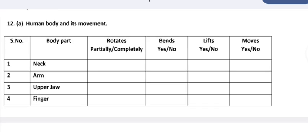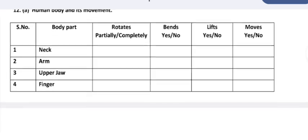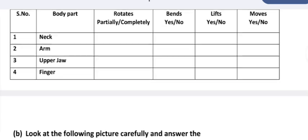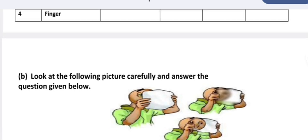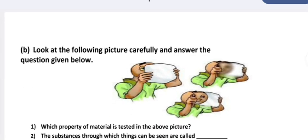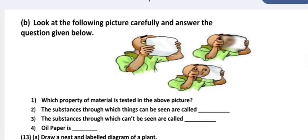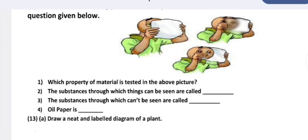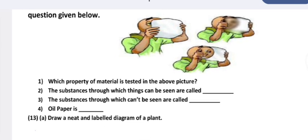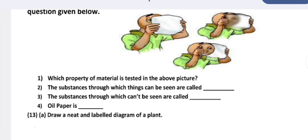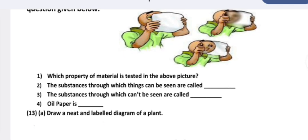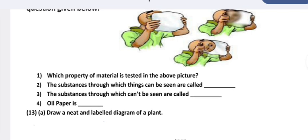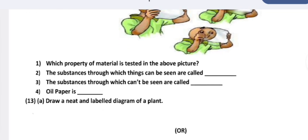Observe the following picture carefully and answer the given questions below. Which property of material is tested in the above picture? The substances through which things can be seen are called transparent substances. The substances through which things cannot be seen are called opaque substances. Oil paper is translucent.